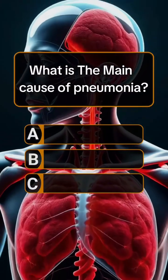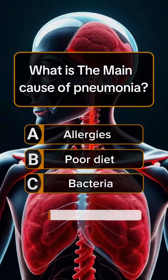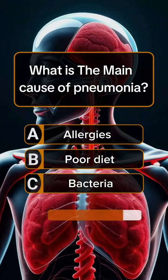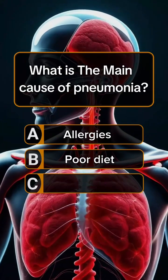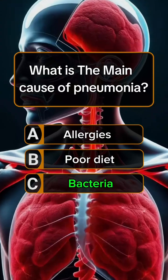Question 1. What is the main cause of pneumonia? Answer C. Bacteria.